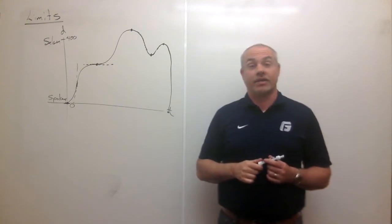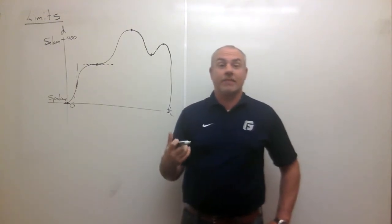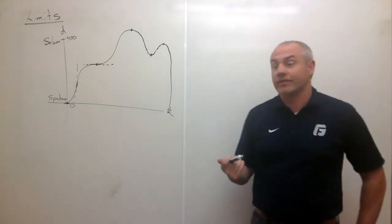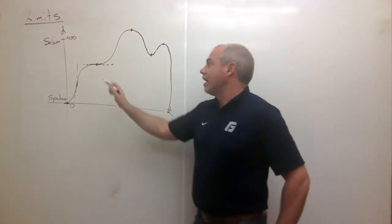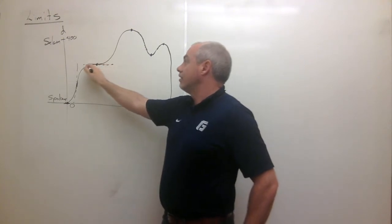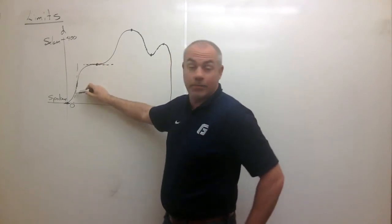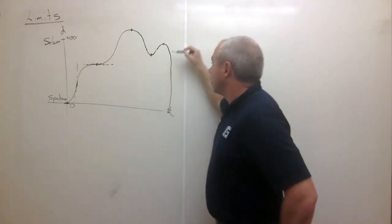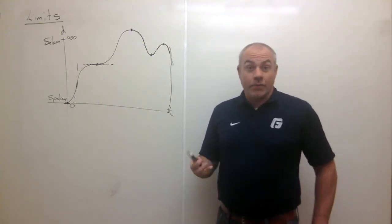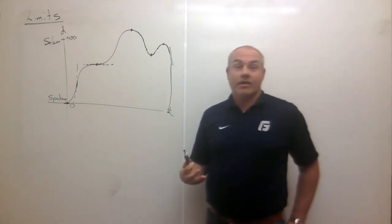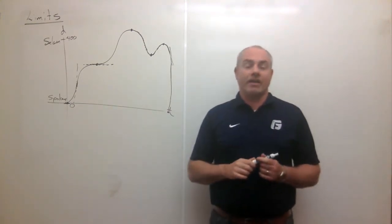Just by looking at the graph for a while, you can get a feel for the trip. The big thing I want you to notice is that we can tell something about my trip based on the slope of the graph. The slope on this graph tells me about my speed. When there's a slope of zero, I'm moving zero miles per hour. When I've got a very steep positive slope, I'm going quite fast towards Salem. When I have a very steep negative slope, I'm going quite fast towards Spokane.